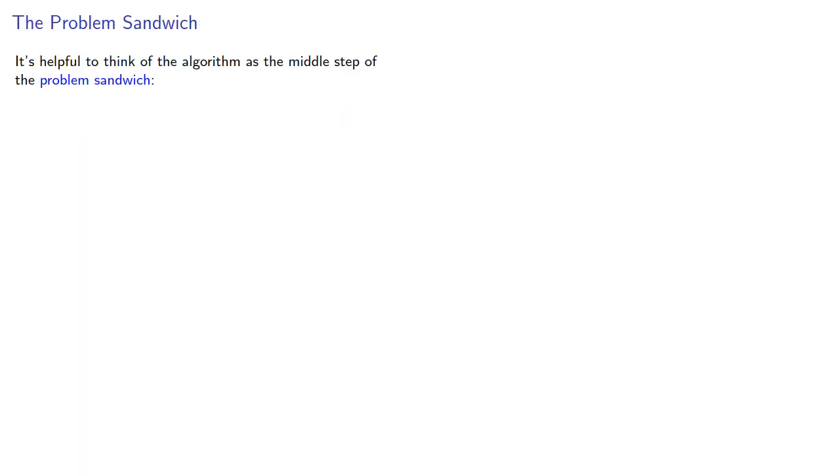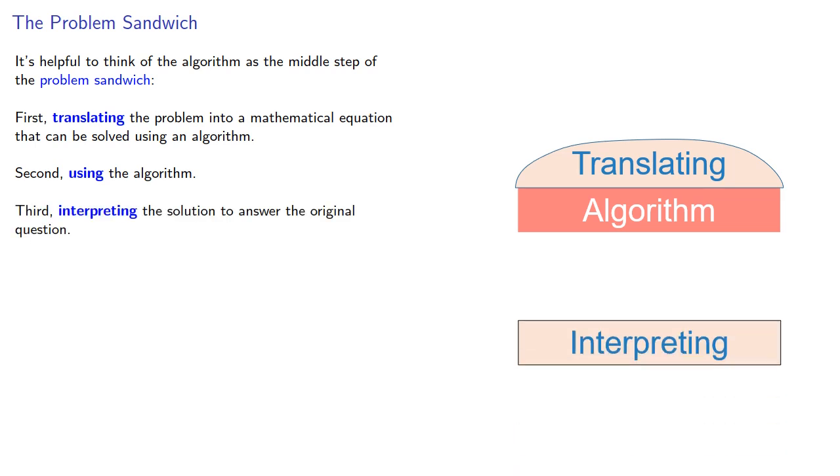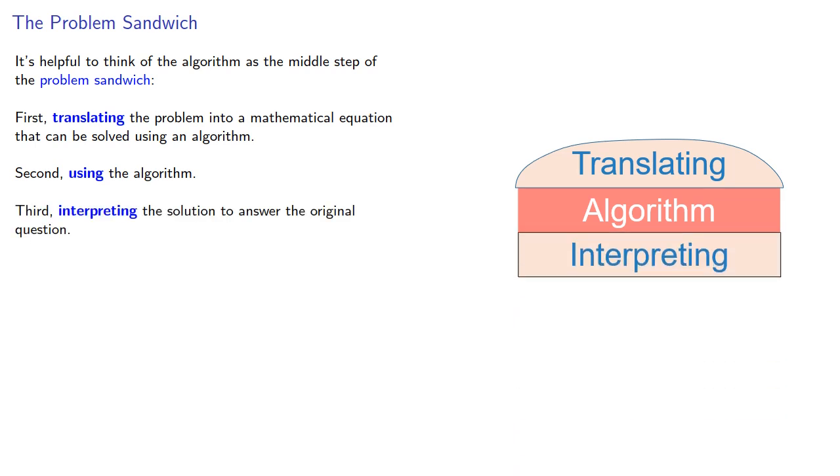It's helpful to think of the algorithm as the middle step of a problem sandwich. The first step is translating the problem into a mathematical equation that can be solved using an algorithm. Second, using the algorithm. And then third, interpreting the solution to answer the original question. The middle step, where we use the algorithm,